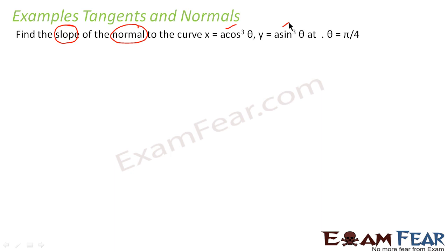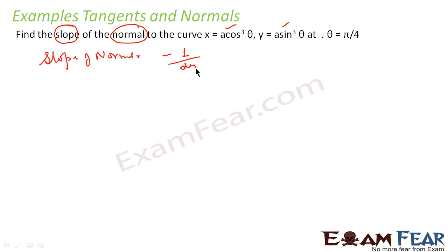Now, the slope of normal is nothing but −1/(dy/dx), at θ = π/4, because this is nothing but f′(x). So, my normal slope is −1/(dy/dx) where θ = π/4. So I have to find dy/dx.